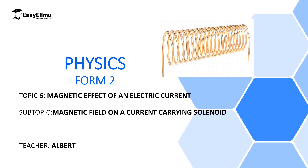Welcome to ECL EMU Learning Simplified. In the beginning of this topic we discussed the key statement which will guide the beginning and the end of this topic, and that is: in every conductor carrying current there is a magnetic field around it.